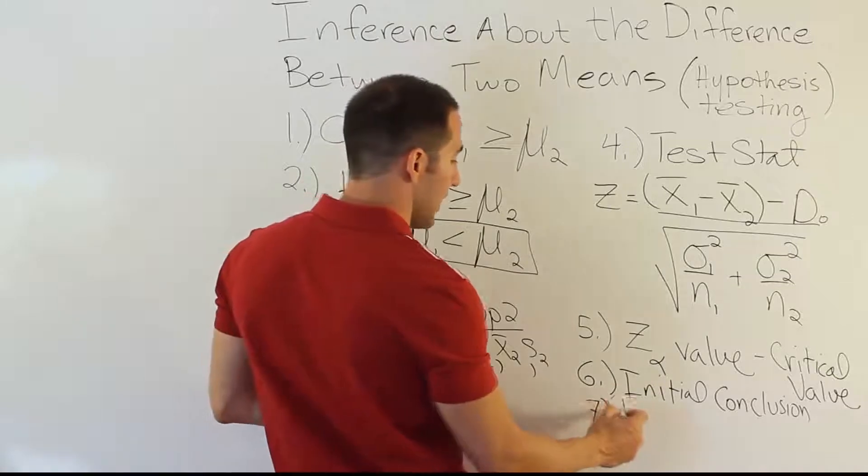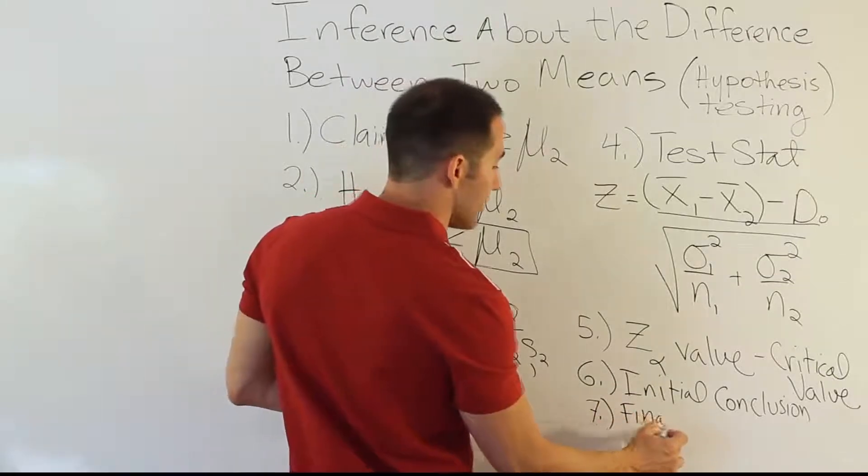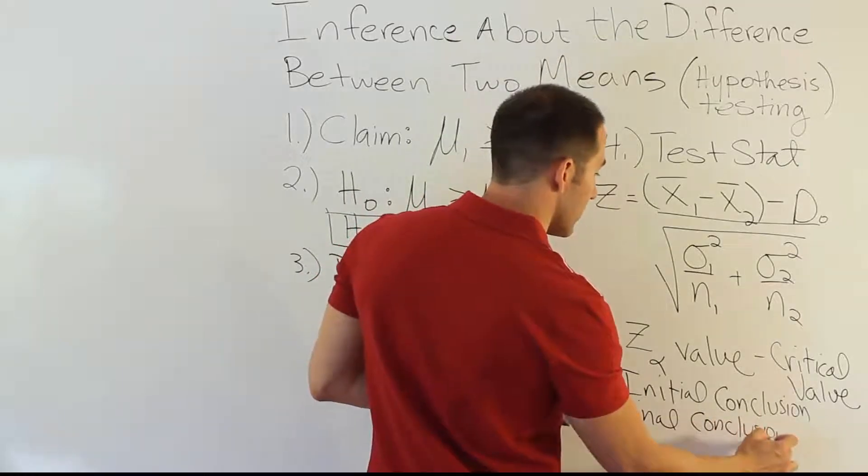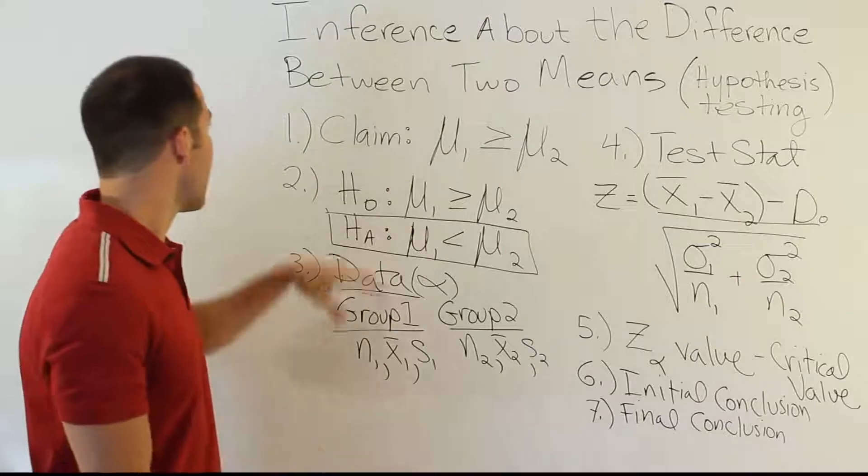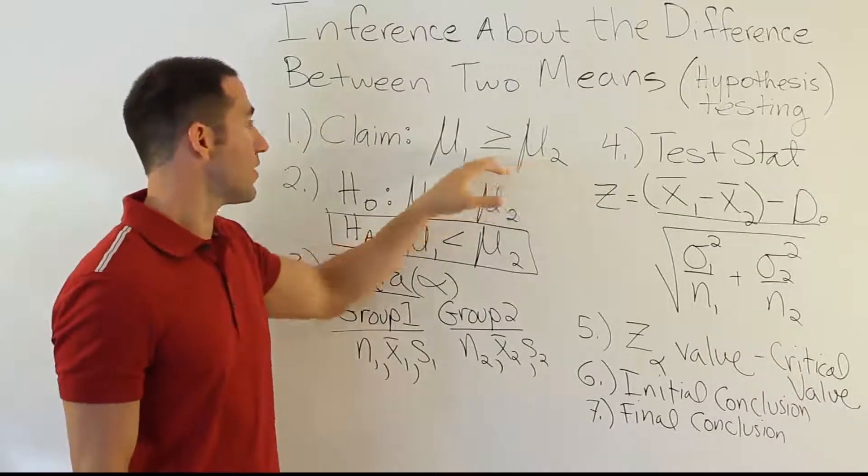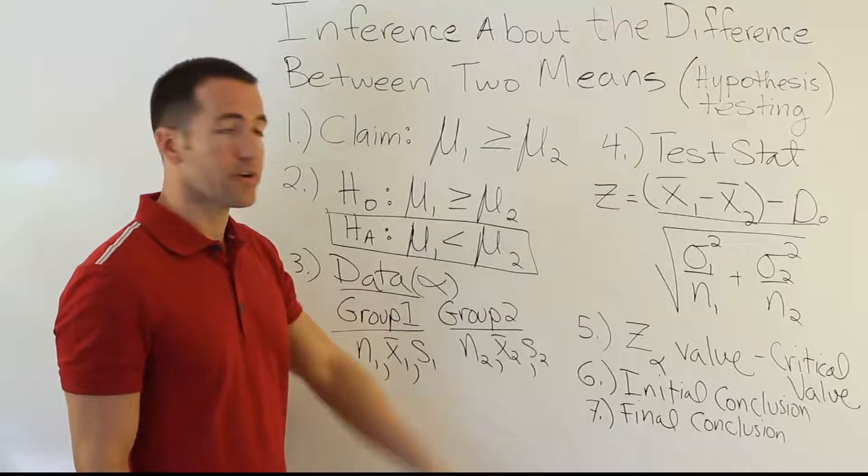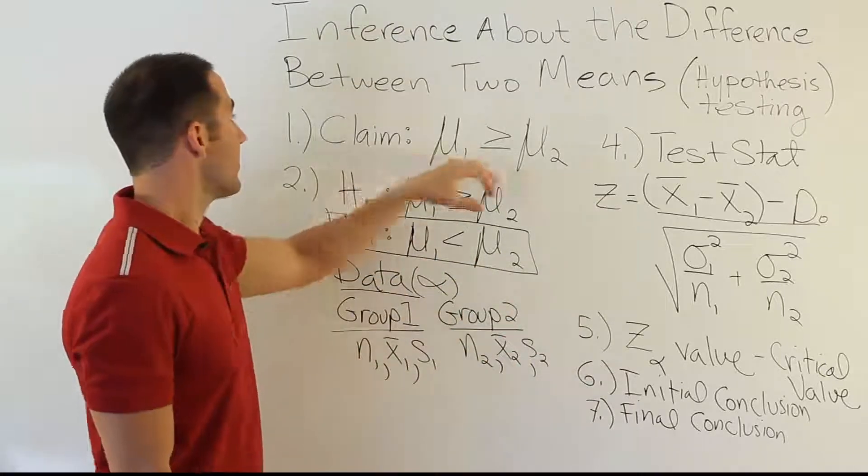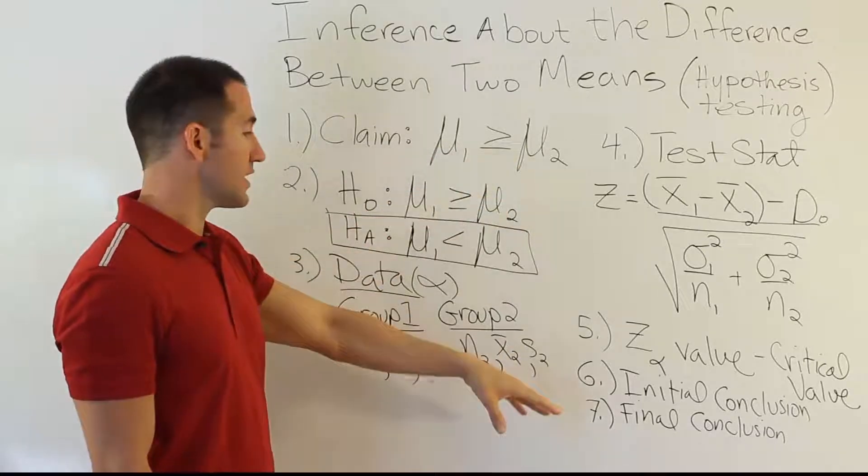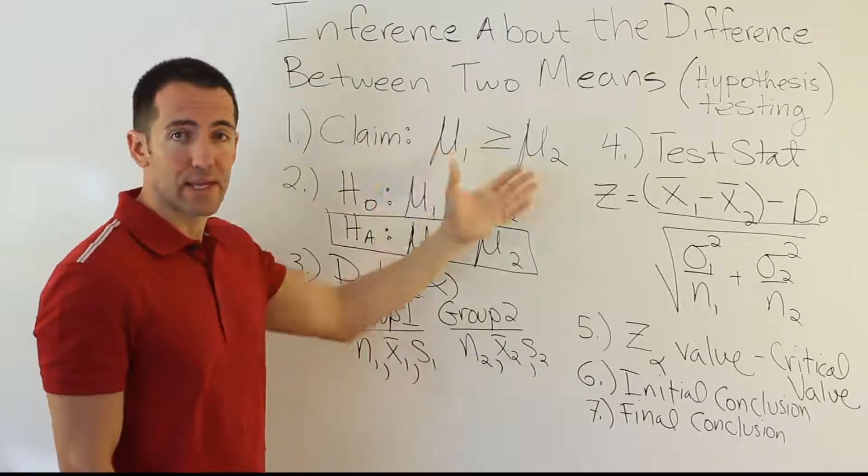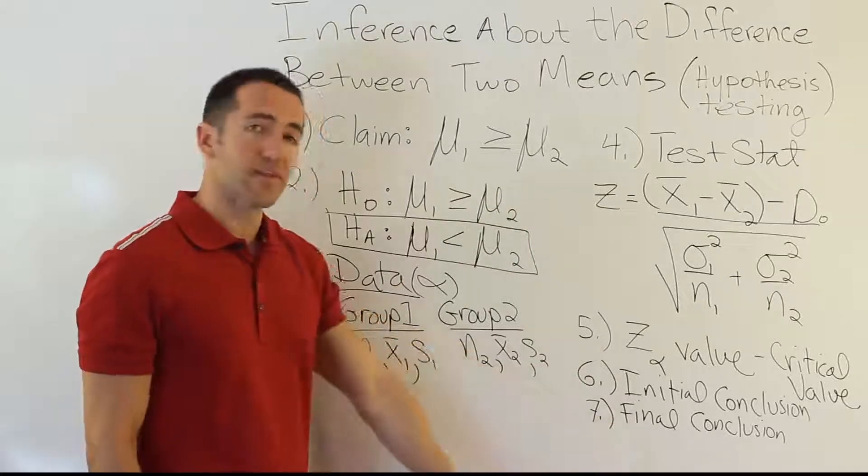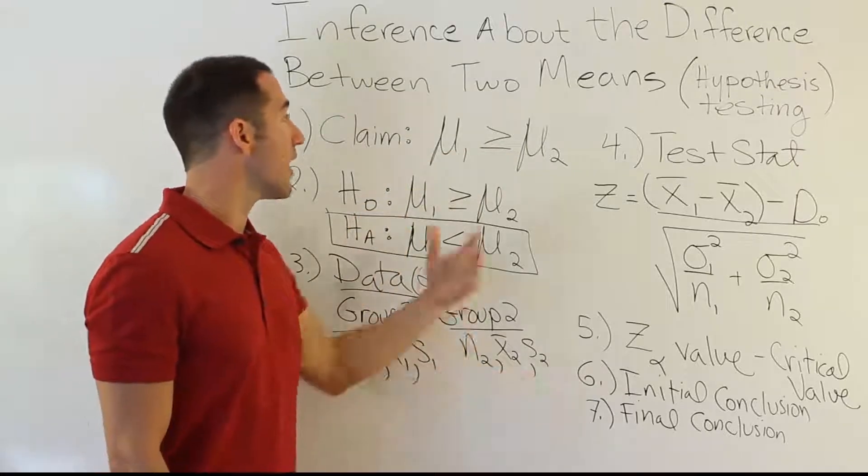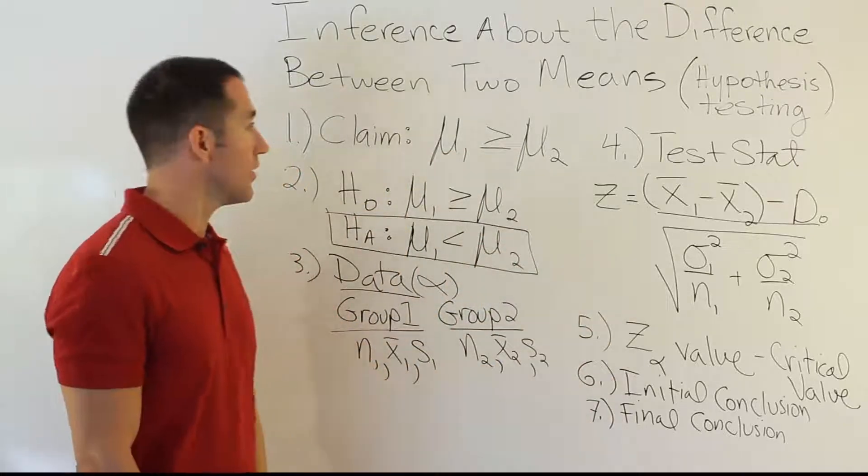And then finally, step 7 is the final conclusion. And that doesn't change as well. That's the same as it was before. So you just really use the same procedure. You would identify the claim and ask whether it's H0 or HA. In this case, it's H0. And you would word your conclusion according to that. So if we decided to reject H0, we would say, based on this claim being H0, if you rejected H0, we'd say the sample data allows us to reject the claim. If we're unable to reject the claim in step 6, I mean reject H0, then since the claim is H0, we'd say the sample data does not allow us to reject the claim, so on and so forth.